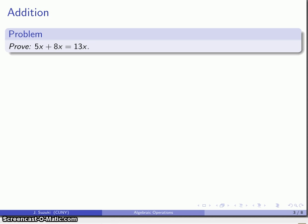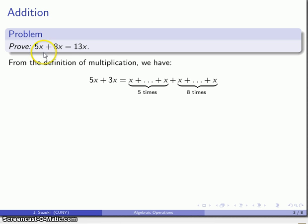And if you know what we mean by these, if you know this definition of multiplication, this is obvious. So from our definition of multiplication, we're adding together 5x and 8x, so I have 5 x's and I have 8 x's, and so when I put those together I have 5 plus 8 x's here, and that gives me a total of 13 x's.